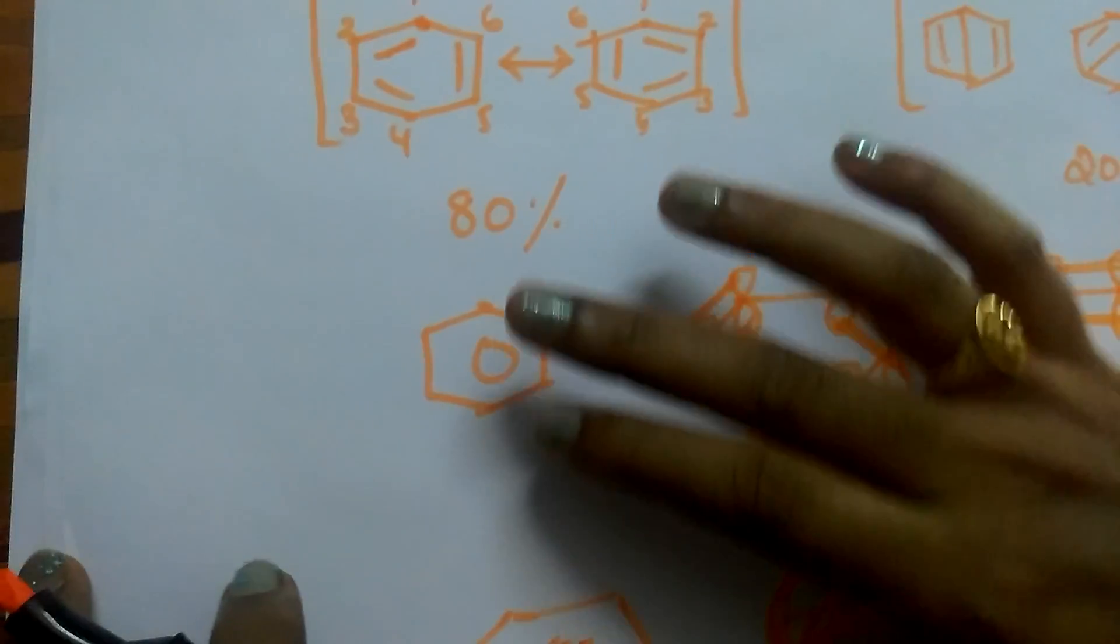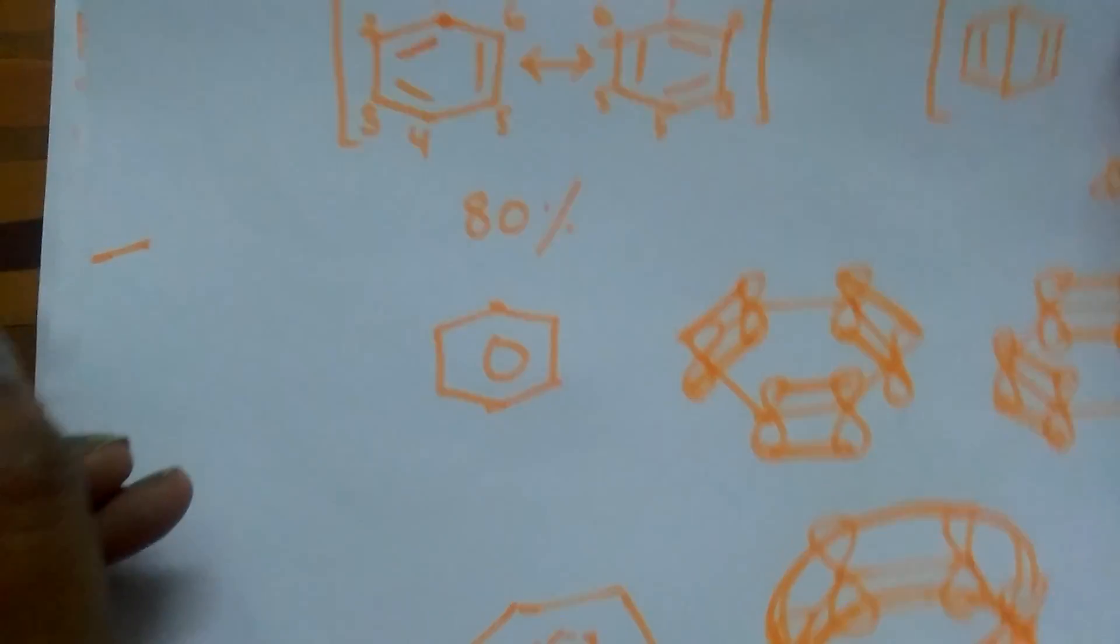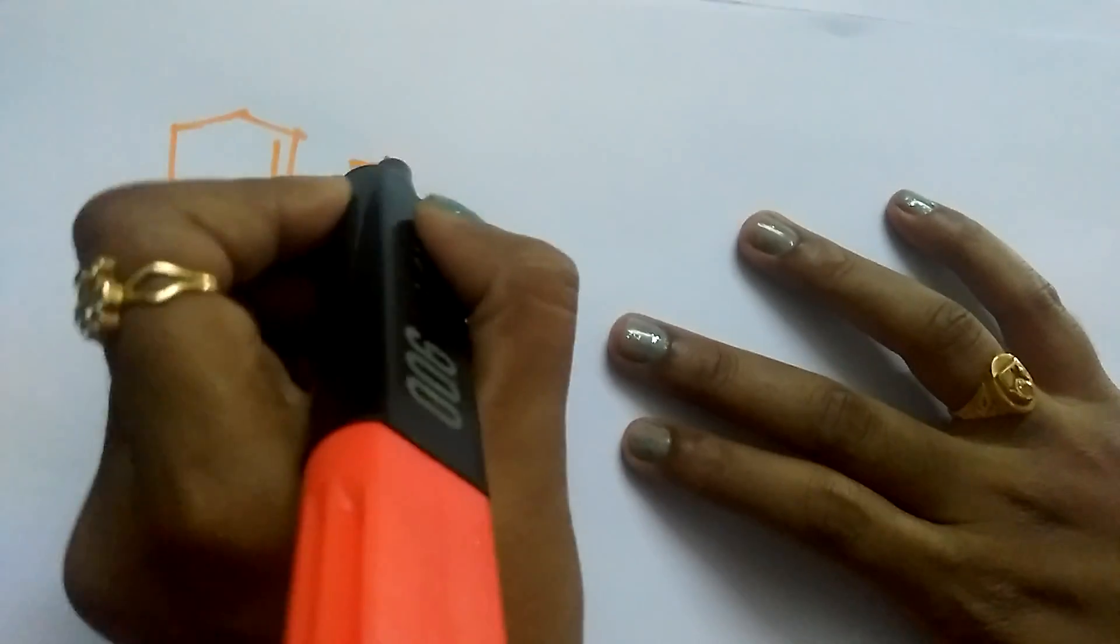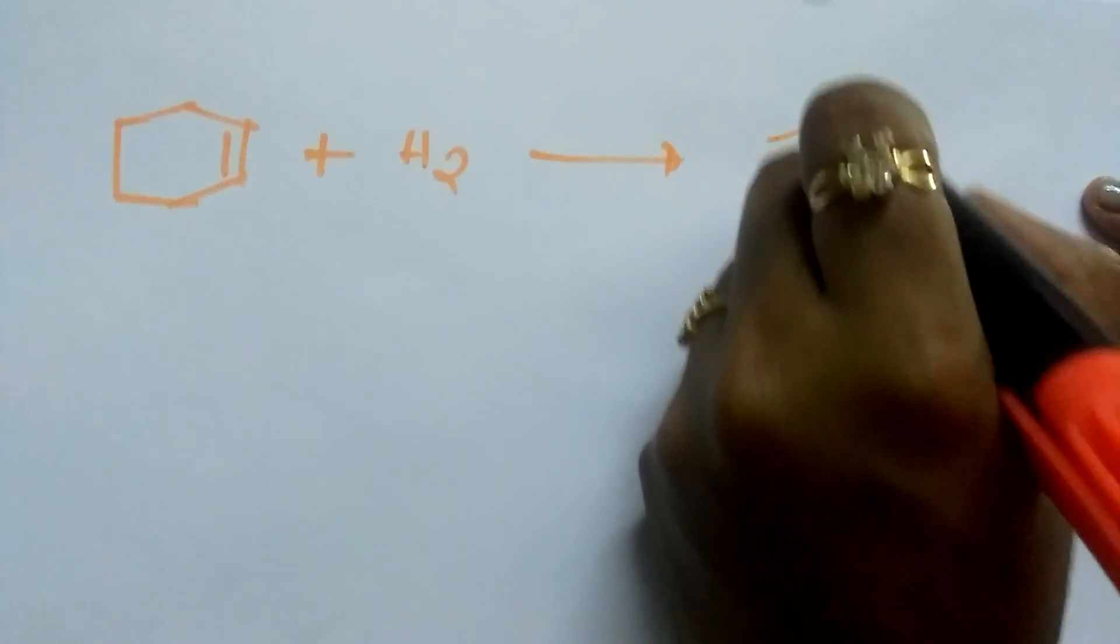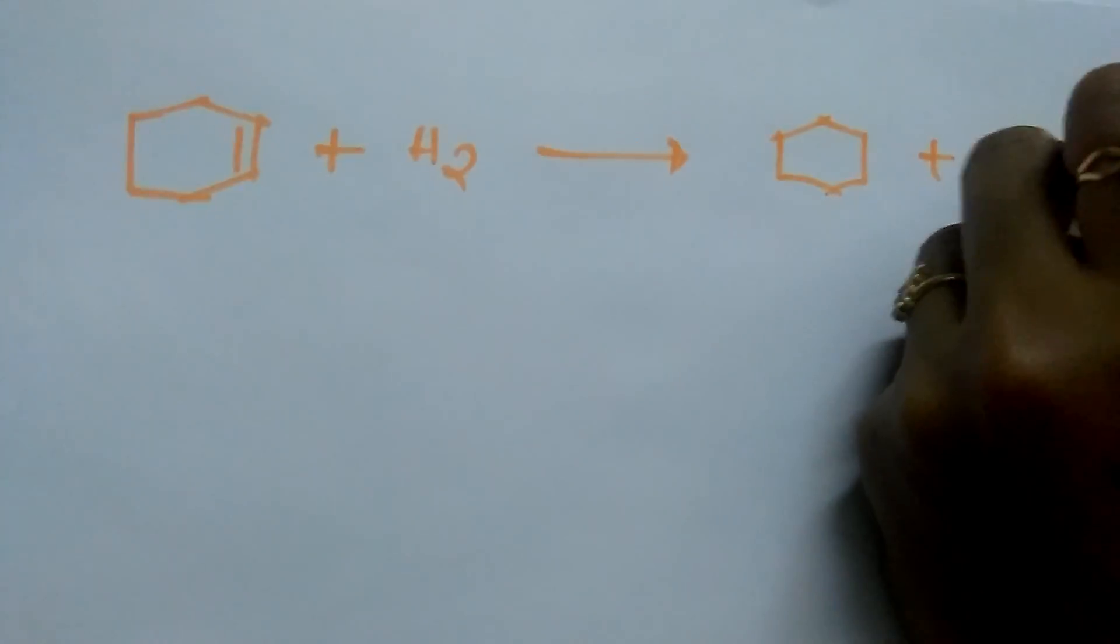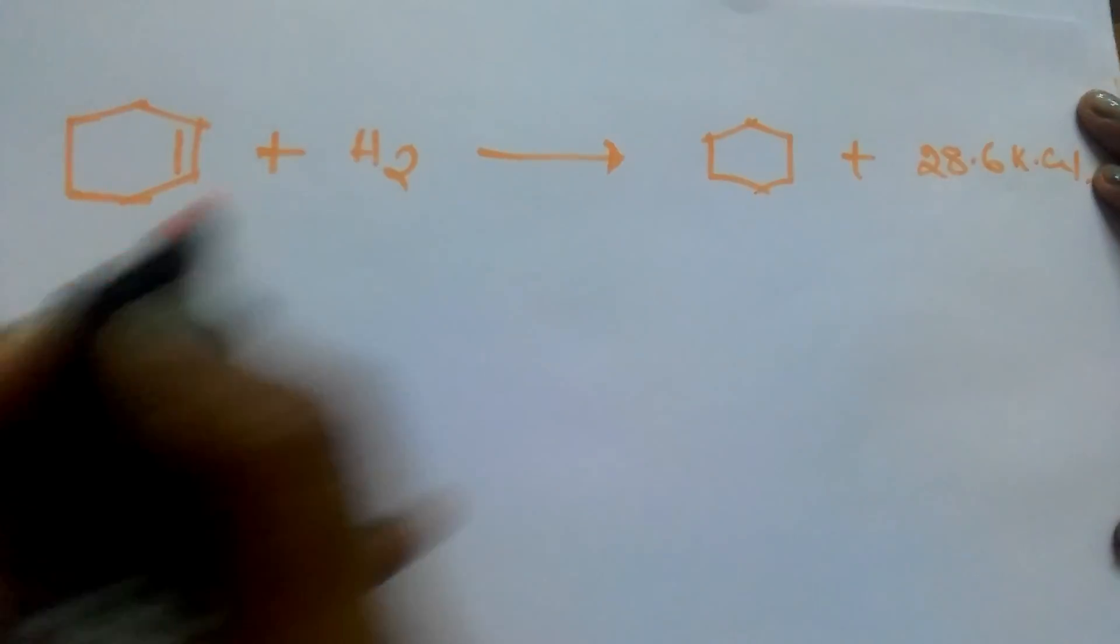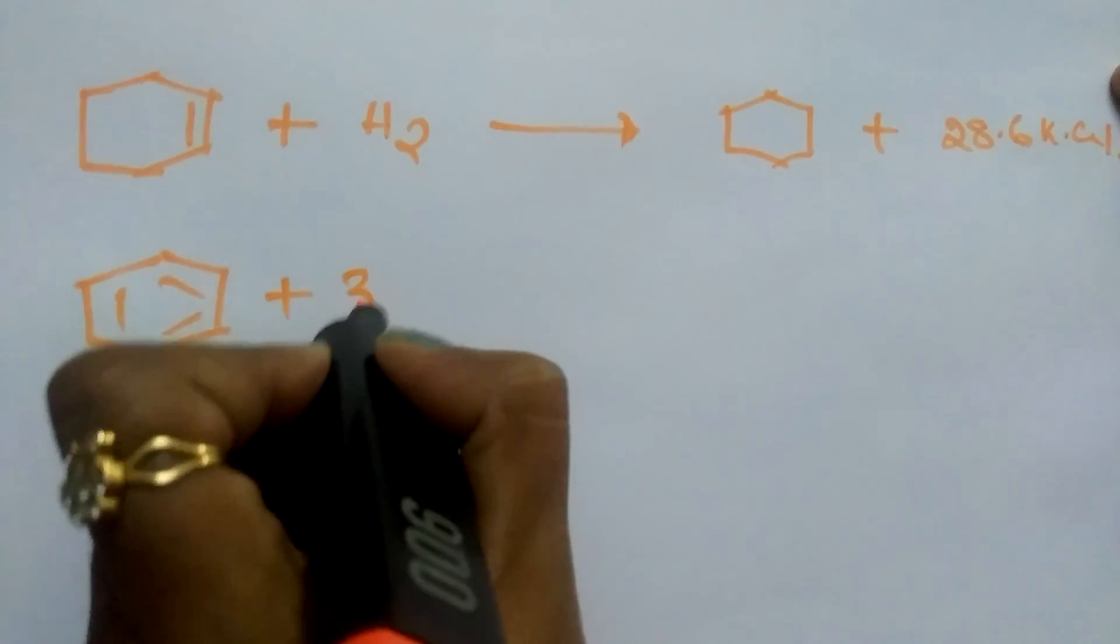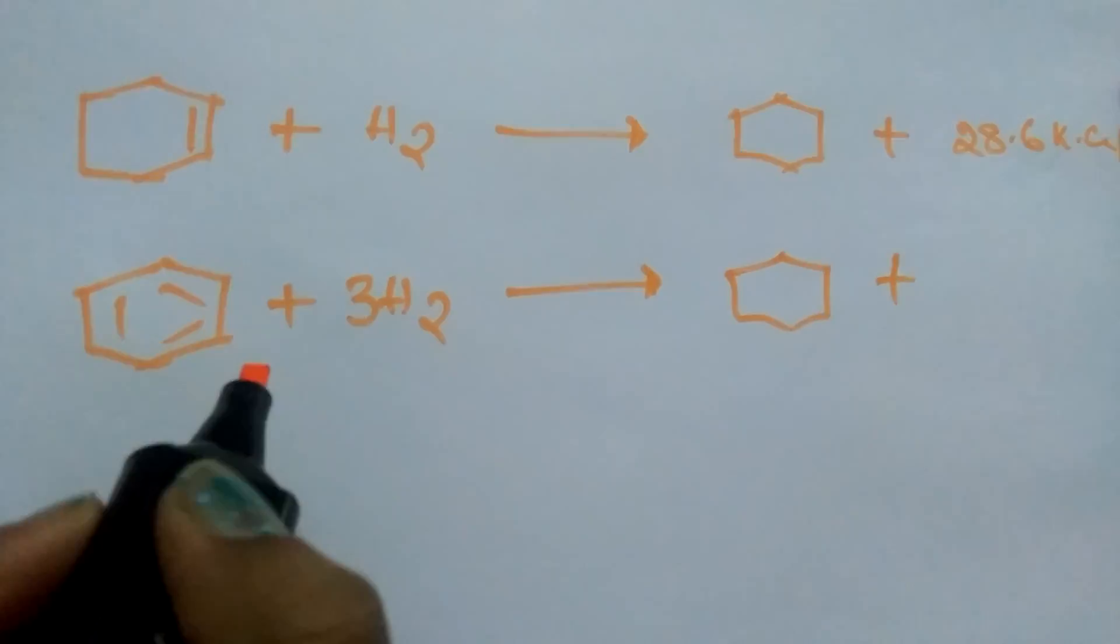According to thermodynamical stability, if you add hydrogen to cyclohexene, it releases some amount of energy, that is 28.6 kilocalories of energy. If you add 3 moles of hydrogen to cyclohexene, how much energy does it release, students?